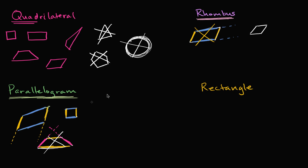Now you might ask: is a square a rhombus? Think about it — are all the sides the same length and are the opposite sides parallel? We already said the opposite sides of a square are parallel, so a square is a parallelogram. And all the sides of a square are the same length. So a square is a rhombus. You could kind of view rhombuses as a pushed-over version of squares.